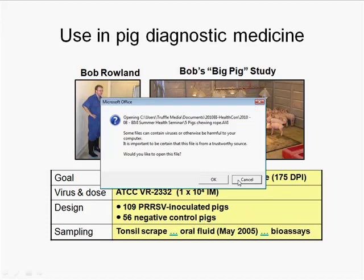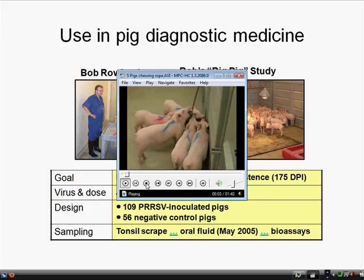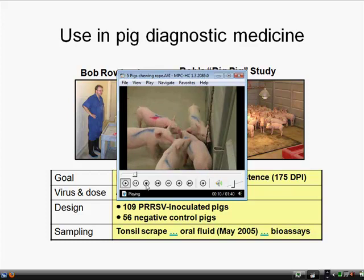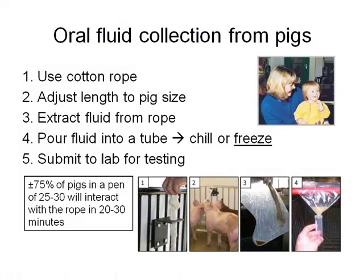For oral fluid collection from pigs, we recommend using cotton rope. We looked at lots of different kinds — if you go to your local hardware store it's hard to find cotton, mostly only synthetic fibers. The problem is synthetic only holds about 50% of the volume that cotton can hold. We also prefer cotton because if the rope got somewhere it shouldn't be, cotton would break down over time while synthetics last forever. It's important to adjust the rope to the size of the pig — position it at the back so the pig has to reach up, giving a cleaner sample. Extraction is simple: put the rope in a bag, squish it, and the liquid flows to one side.